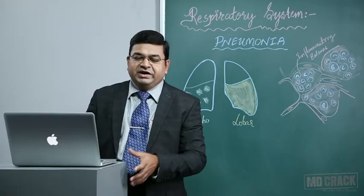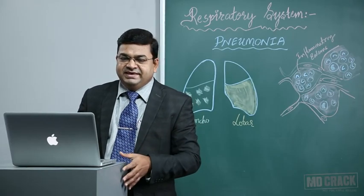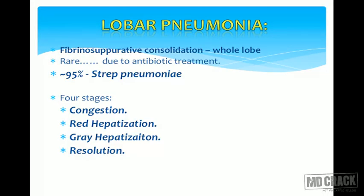In the stage of congestion, you will see a lot of edema and RBC exudate — red congested areas. This will be replaced by a fibrinous exudate, making the lung more and more solid — red and gray hepatization. If the case is treated, the patient will show the fourth phase, which is resolution. If not treated, the patient will end up with red or gray hepatization itself.